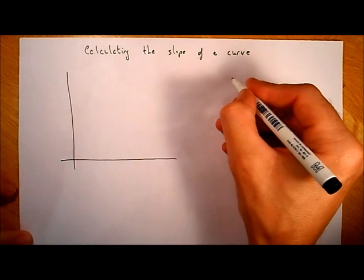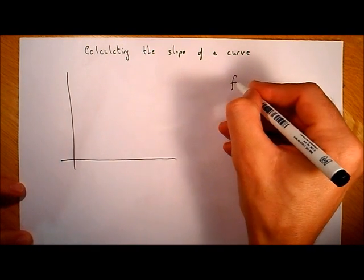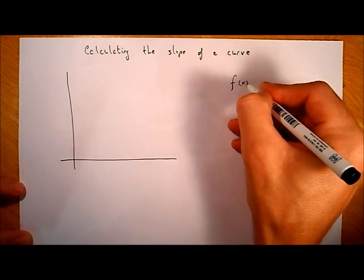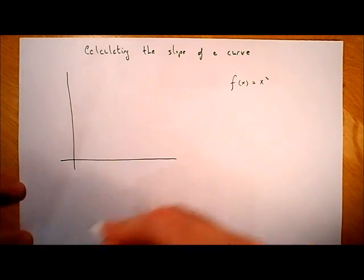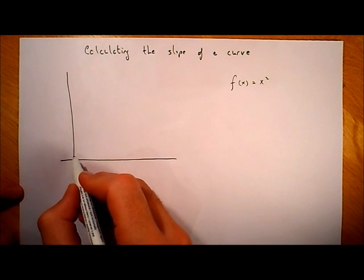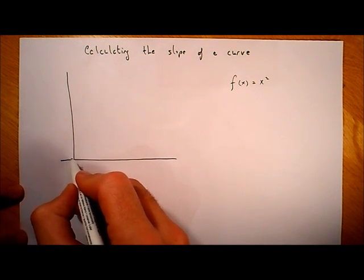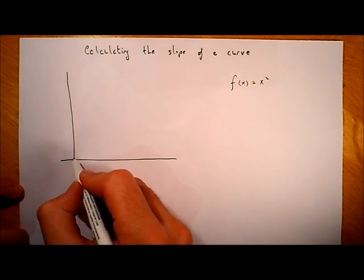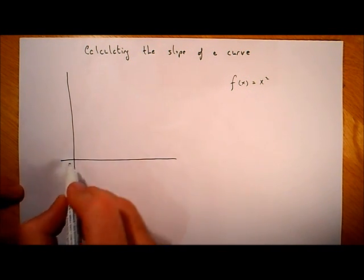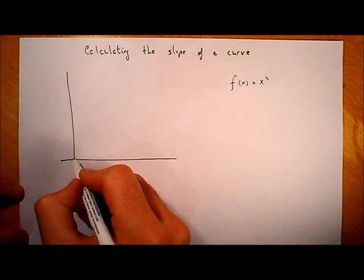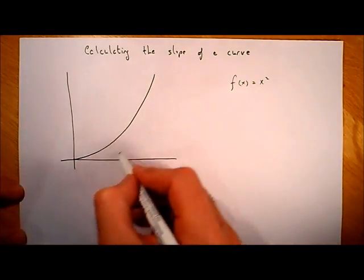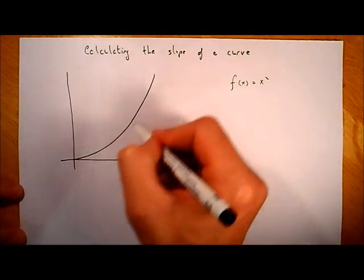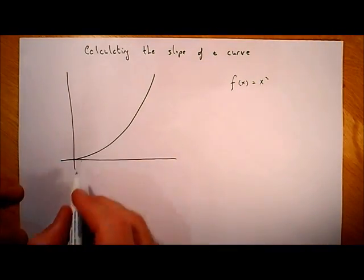So let's say we take a simple curve: f(x) is equal to x squared. Let's sketch that curve — it's going to look like this. It'll cross at (0, 0) and come up, getting a little bit steeper. You can see the slope changes as it goes up.